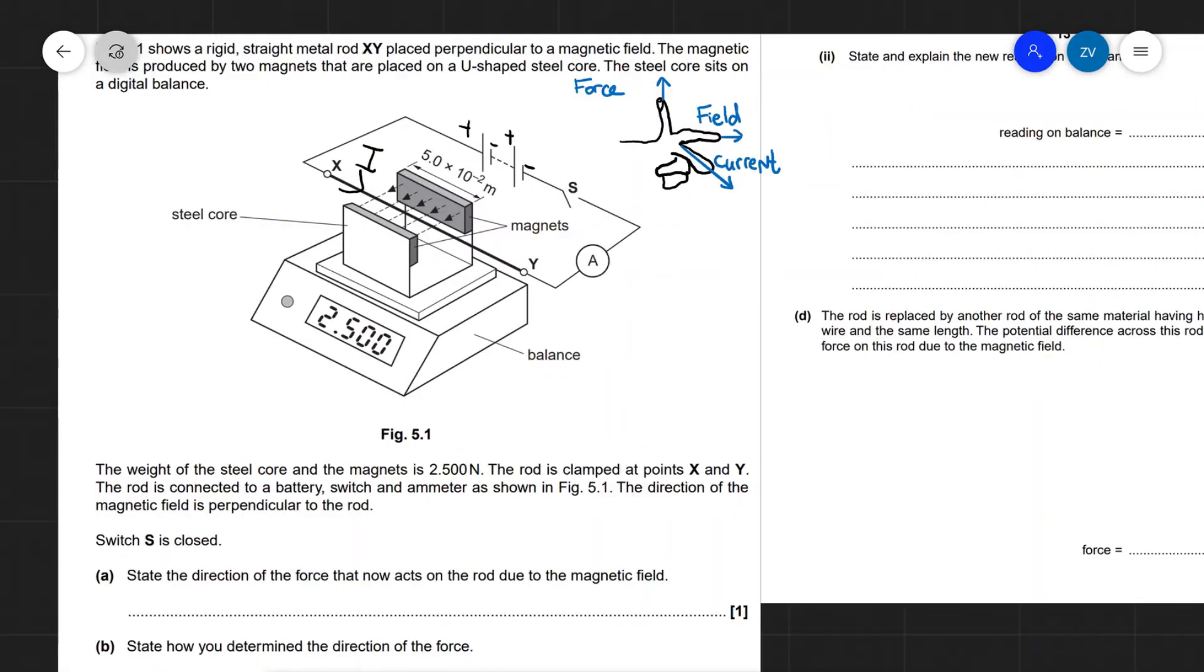Now, just a recap of Fleming's left-hand rule, which I've illustrated over here on the right. The thumb is your direction of motion, which is the force. The first finger gives you the direction of the field, the magnetic field, and your second finger gives you the direction of your current.